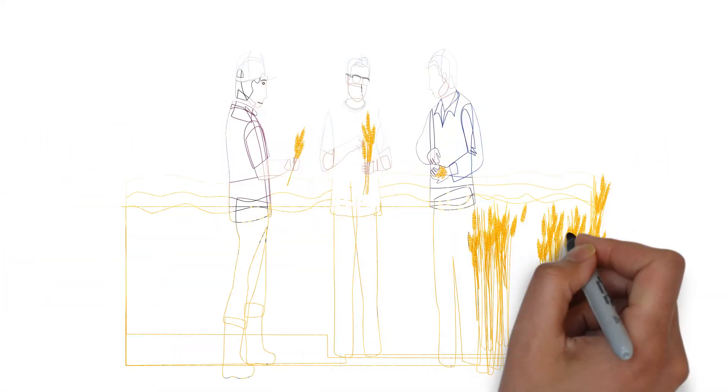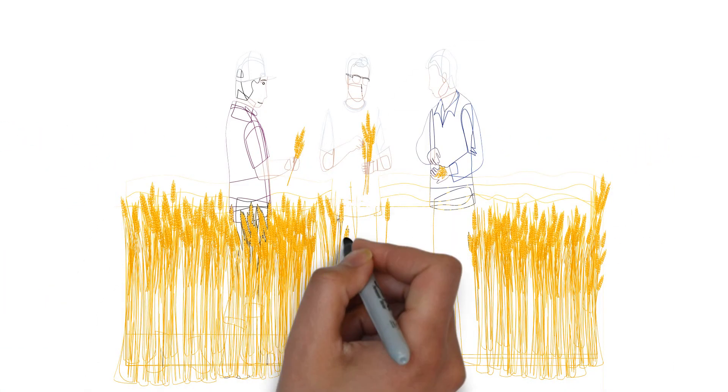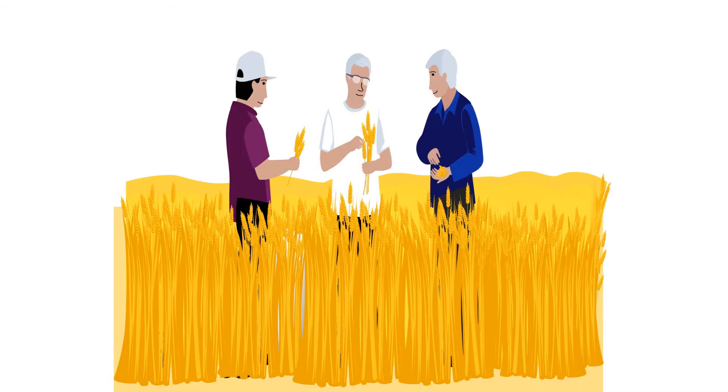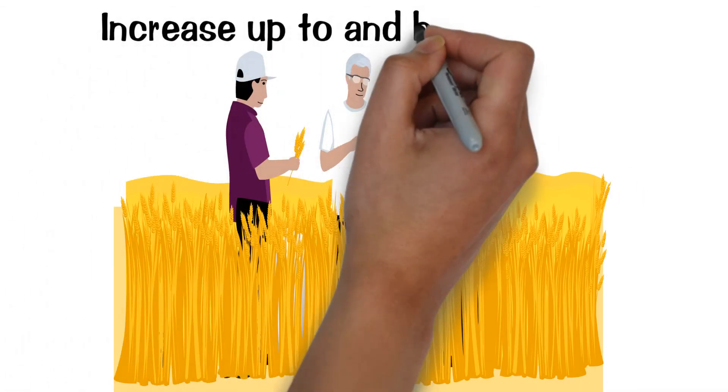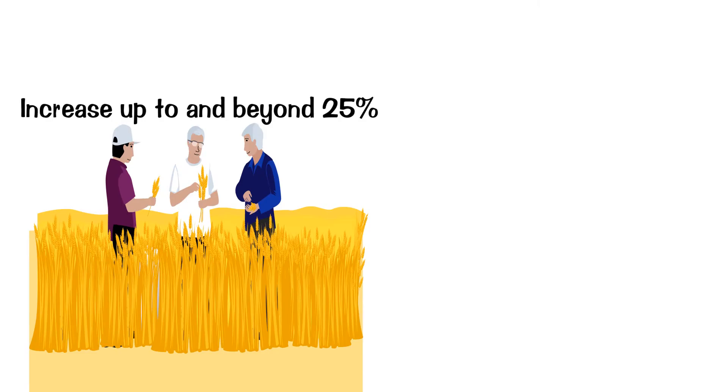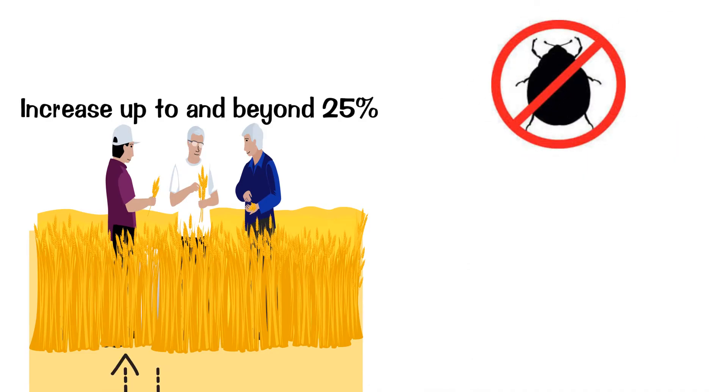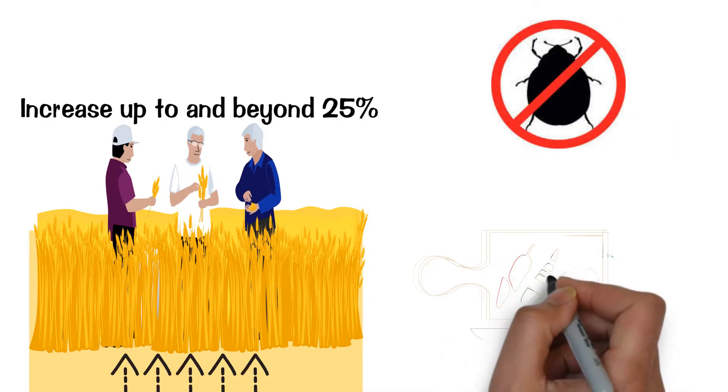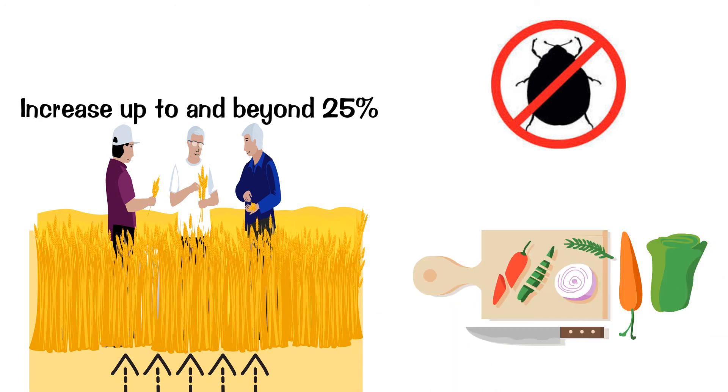In fields where our microtransmitter system has been tested, the results have been exceptional, providing an increase up to and beyond 25% in production. Also, the plants are more pest-resistant, more nutrient-dense, and provide a better quality of vegetables that have a better taste, a longer shelf life, and many other advantages.